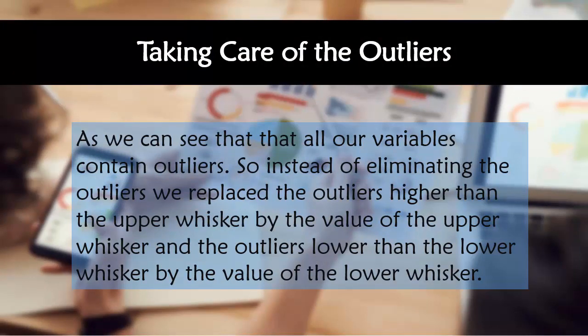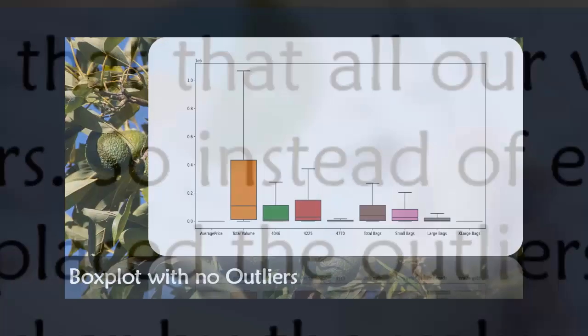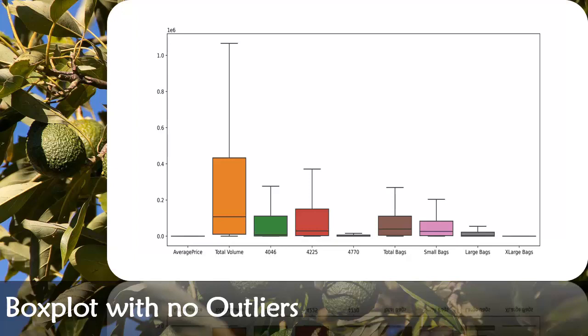So instead of eliminating the outliers, we have replaced the outliers higher than the upper whisker by the value of the upper whisker and the outliers lower than the lower whisker. So now from this box plot we can clearly say that our data is free from outliers and it is expected that we will achieve higher accuracy with it.